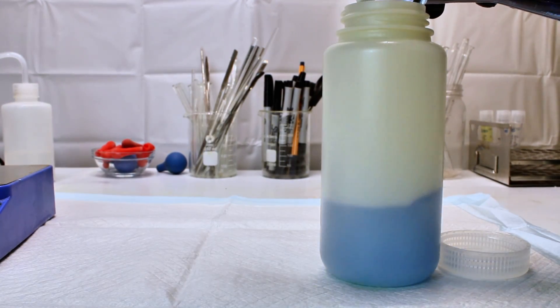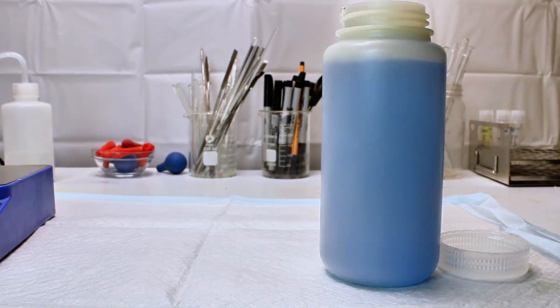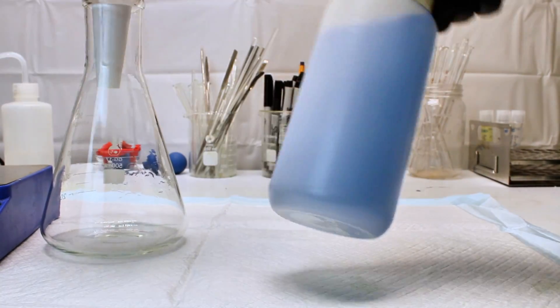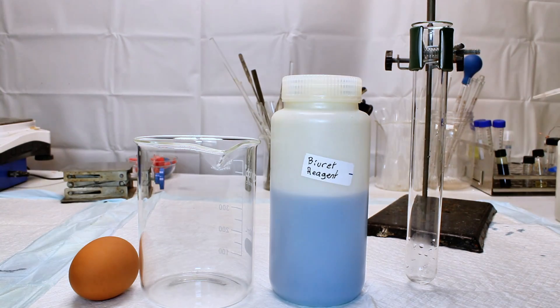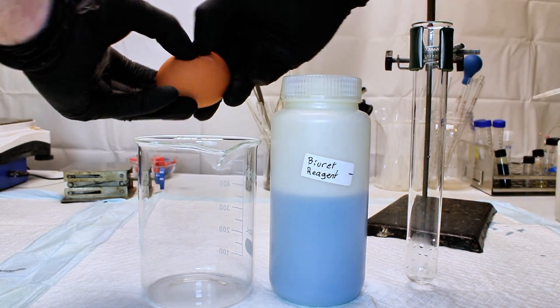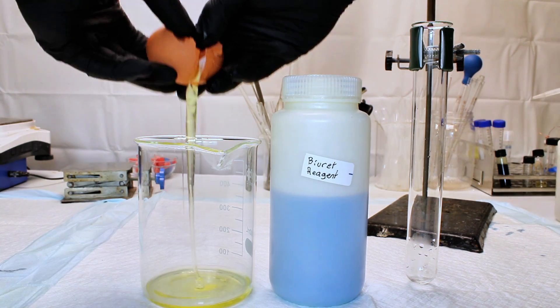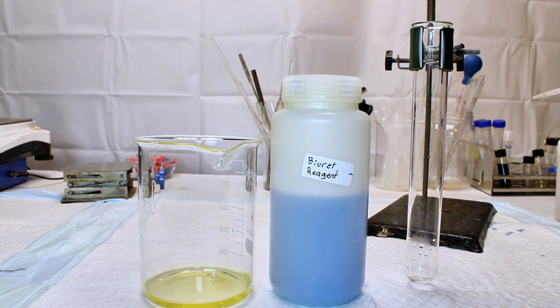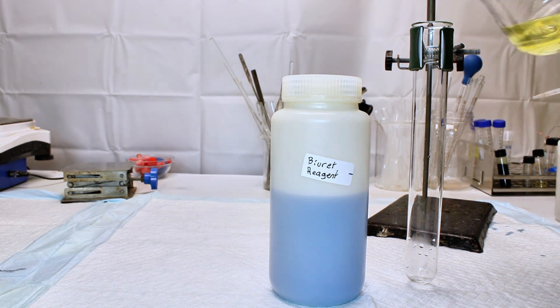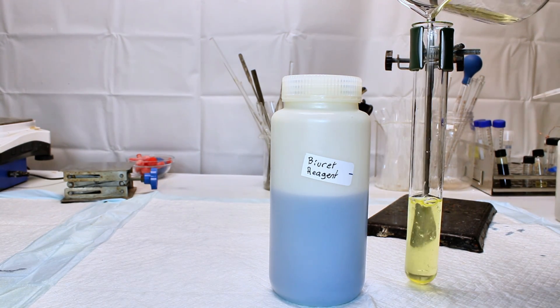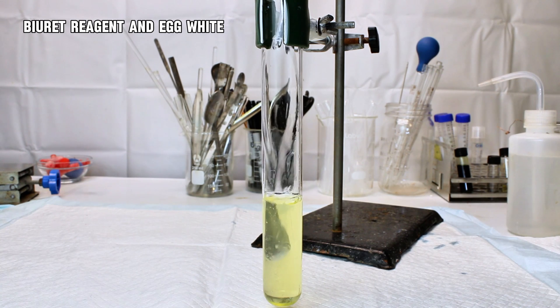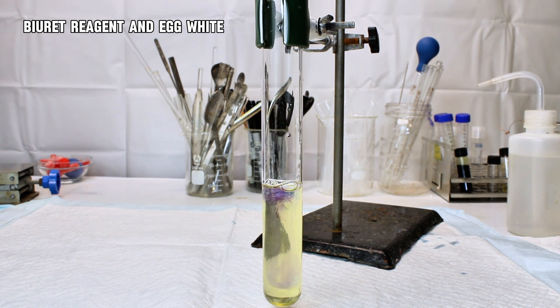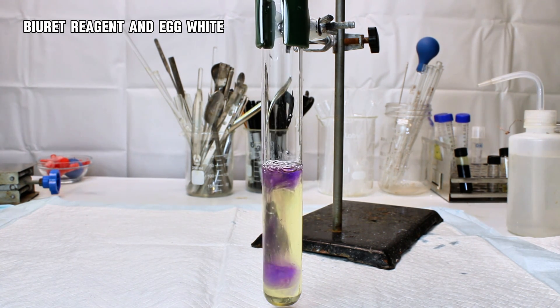Once this is mixed for a minute, it's ready to use, and to make sure it works, I decided to test it on some egg white. I did this first with straight egg white, and then again with 1 milliliter of egg white dissolved in 200 milliliters of water to see if it could still detect protein at such a low concentration. In both cases, the addition of the Biuret reagent to the protein sample resulted in a gorgeous violet color, which was actually quite difficult to see on camera in the dilute sample.